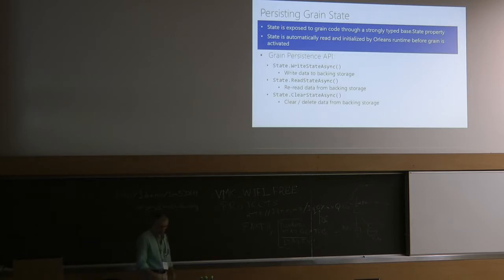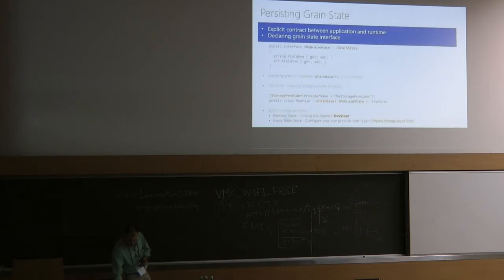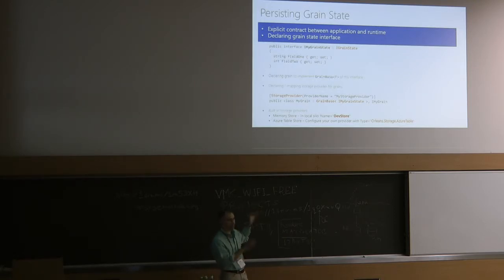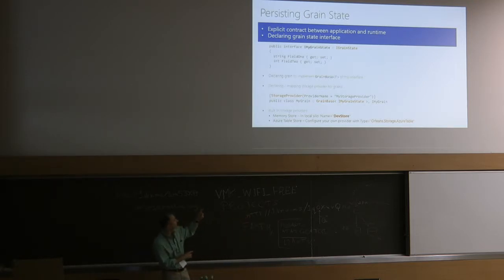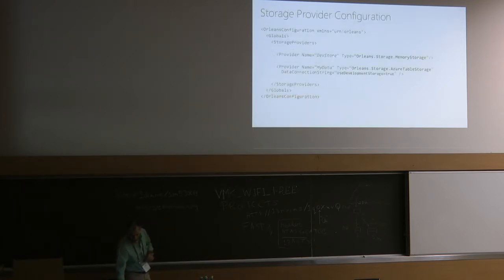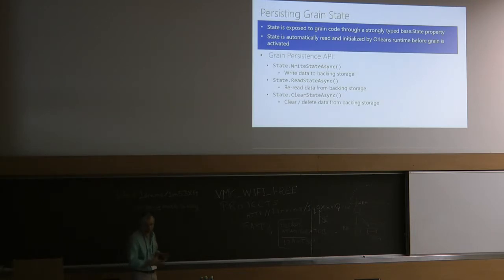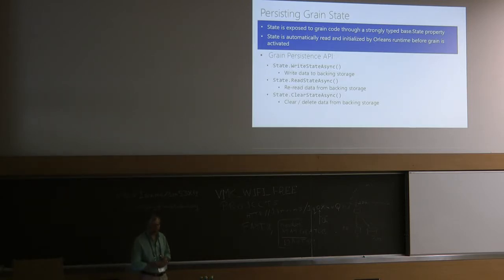In the configuration file, you specify the provider type and put your assembly with the provider implementation in the same folder — at silo startup, reflection finds all providers automatically. When you want to use persistence, instead of extending GrainBase you extend GrainBase of T where T is your state interface. What you get is a State property on the base class. The state also exposes three methods: WriteStateAsync, ReadStateAsync, and ClearState. In most cases you only need WriteStateAsync.